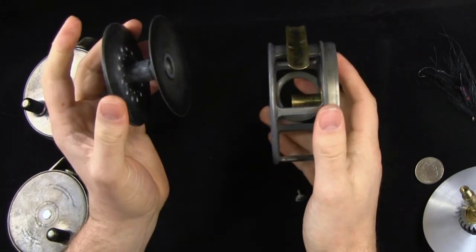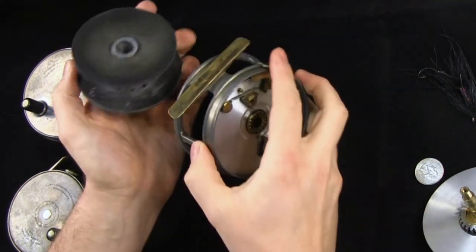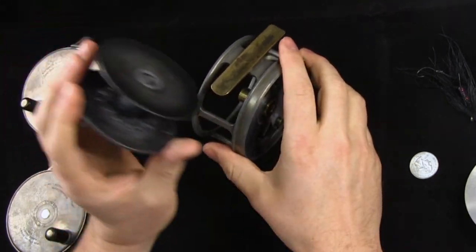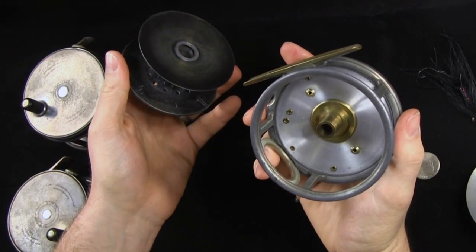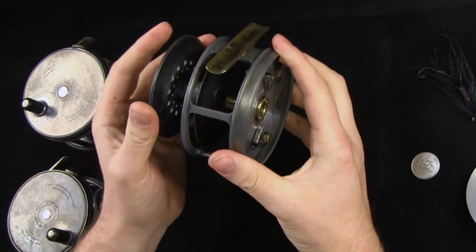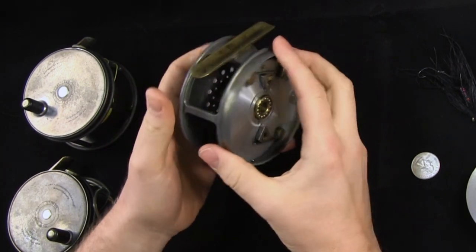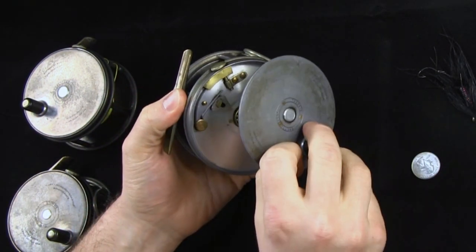One thing about these perfects, they're three piece reels. You've got your winding plate, you've got your spool, you've got your cage. Pretty unique to the perfect style of reel. As you go to close these up...